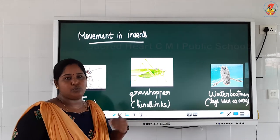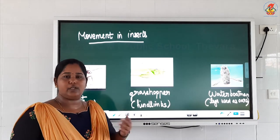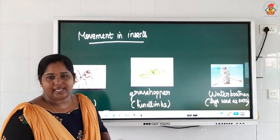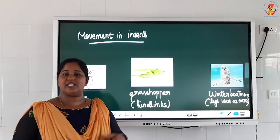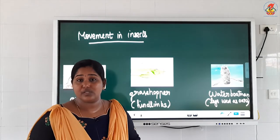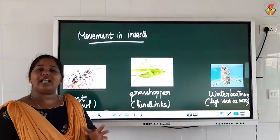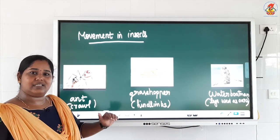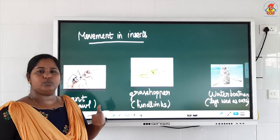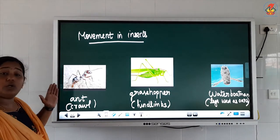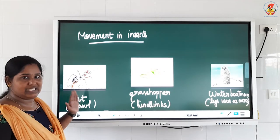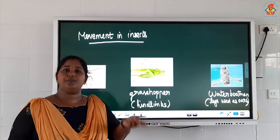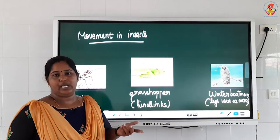So we discussed land animals and water animals. Land animals use forelimbs and hind limbs to move — some animals like dogs and cats use all four, while human beings use only hind limbs. Water animals: fish uses fins, turtle uses paddle-like limbs, penguin uses flippers, and frog uses webbed feet. Next is insects. Insects are six-legged creatures — you can count six legs — and these legs are used for crawling. They normally crawl on the ground with their six legs.